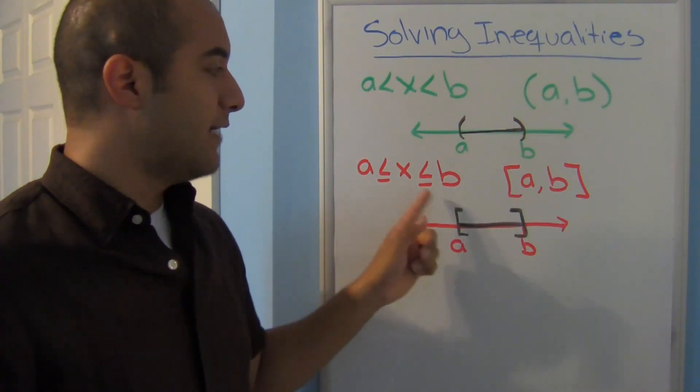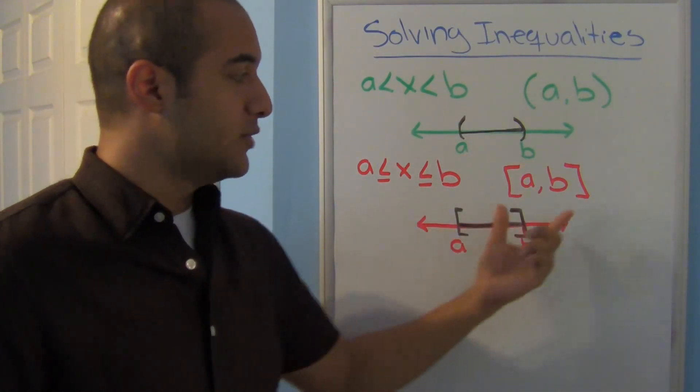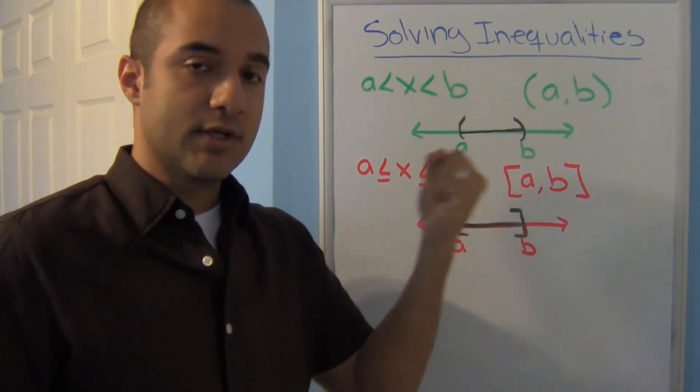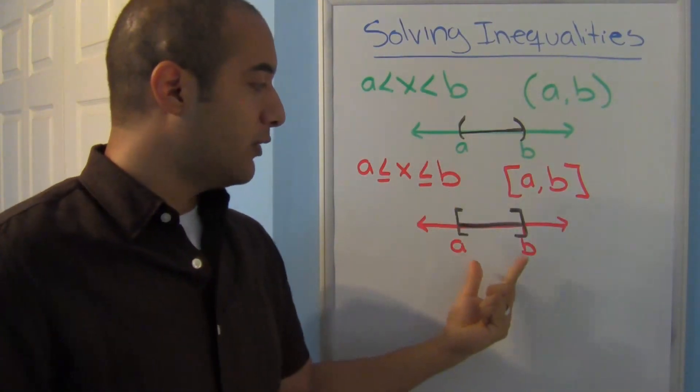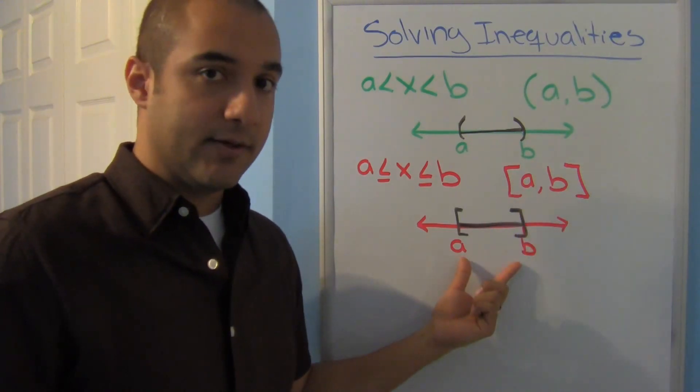Here where I have equal to signs, notice that I'm using a bracket. That's the same as using a closed circle, and when I graph it, once again I use the brackets that match that up.